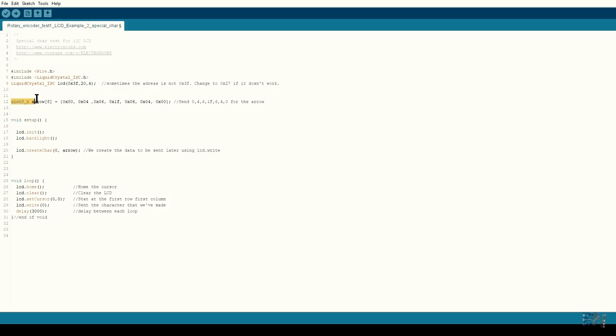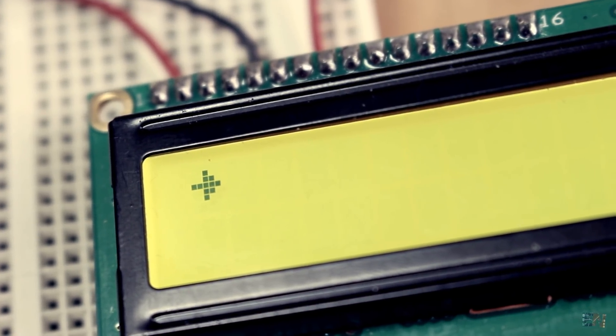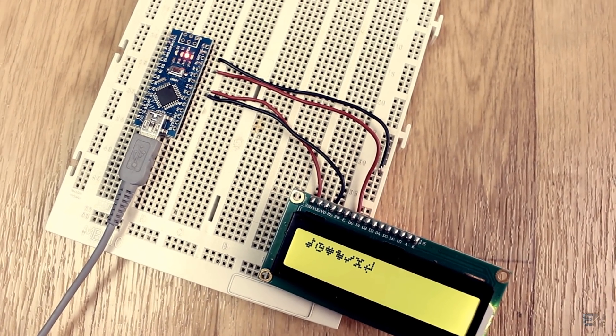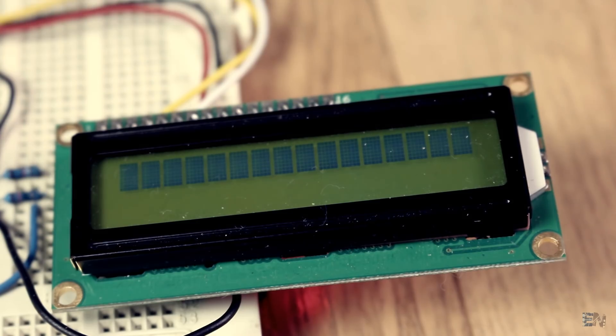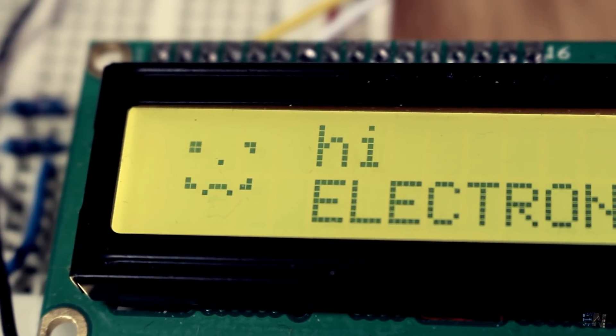So in the code, I create a new byte called arrow and the vector will be these numbers. Then in the setup loop, I create the symbol using the createChar function and give to it the 0 position. So now in the loop, I use the lcd.write function to send the 0 character that I've just created. Add the delay, upload the code and there you go, I've got the arrow symbol printed on the screen. Do the same for any symbol that you want. You could even create 2 symbols, then when put together, we'll create a unique symbol. That's it, let's put the LCD aside and now look on how the DF player module works.